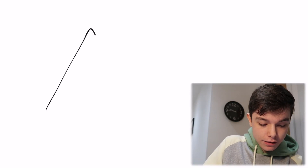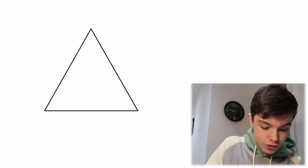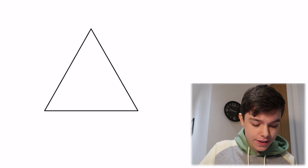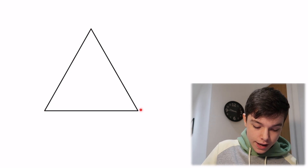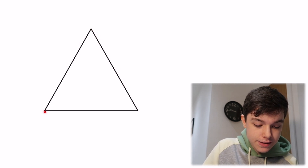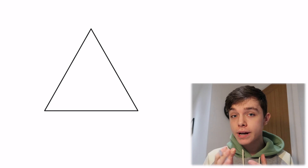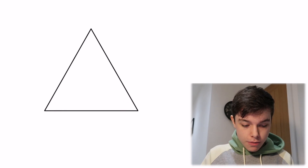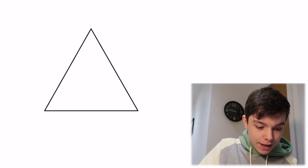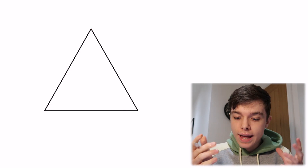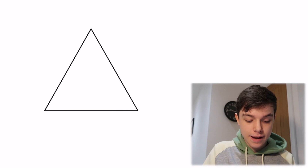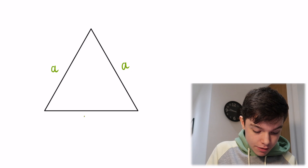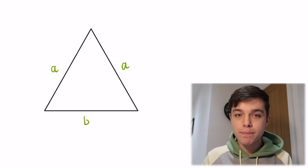Let's draw ourselves an isosceles triangle. An isosceles triangle has two sides that are equal in length — in this case these two sides here. An isosceles triangle also has two equal angles. I'm going to call those two equal sides side A, and I'm going to call the base side at the bottom side B.